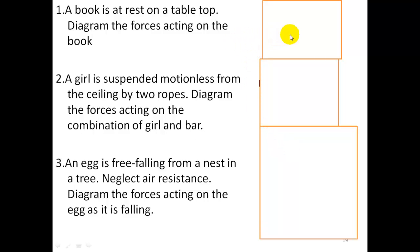What I want you to do now is to draw a free body diagram showing a book at rest on the table, a girl sitting on a bar which is suspended by two ropes, an egg is falling from a tree.